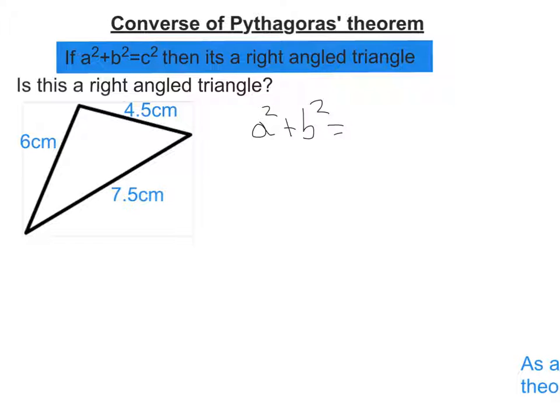So A squared plus B squared, well, A and B are your short sides in your triangle, so 6 and 4.5 are the two shorter sides, so 6 squared plus 4.5 squared. So I square those numbers, and we're going to get 36 plus 20.25, and then I add those two together, 56.25.